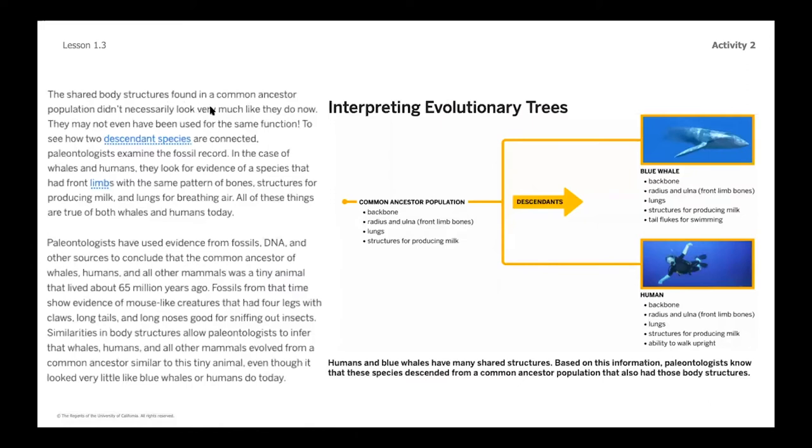The shared body structures found in a common ancestor population didn't necessarily look very much like they do now. They may not have even been used for the same function. To see how two descendant species are connected, paleontologists examine the fossil record in the case of whales and humans. They look for evidence of a species that had front limbs with the same pattern of bones. Structures for producing milk and lungs for breathing air. All of these things are true of both whales and humans today. And just as a reminder, when we're talking about limbs, this vocab word right here, we've already used it a couple of times today, but just remember, limbs are kind of like arms and legs because we don't necessarily, we wouldn't consider that the blue whale, we wouldn't necessarily call their flipper a leg or an arm, but we do use this word limb to kind of be a general word for legs, arms, those fin-like structures that whales have as well.